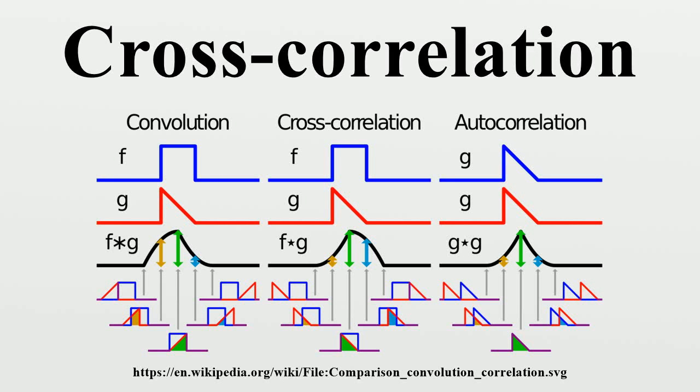In signal processing, cross-correlation is a measure of similarity of two series as a function of the lag of one relative to the other.